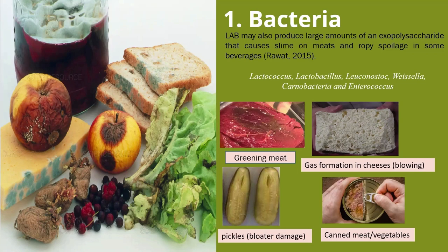Off-flavors described as mousy, cheesy, malty, acidic, and buttery may be detected in wine, meats, milk, or juices spoiled by this bacteria. LAB may also produce large amounts of exopolysaccharides, which cause slime in meats and ropy spoilage in some beverages.